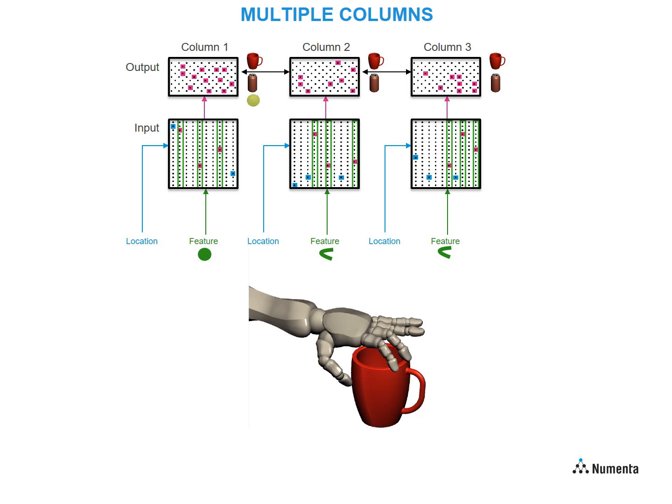The output layer of each column is individually trying to guess the object based on that feature location pair. But because of the lateral connections between the columns, the three columns settle on a representation that is consistent across all three. In this case, the can and cup are still valid hypotheses, but the ball is eliminated.